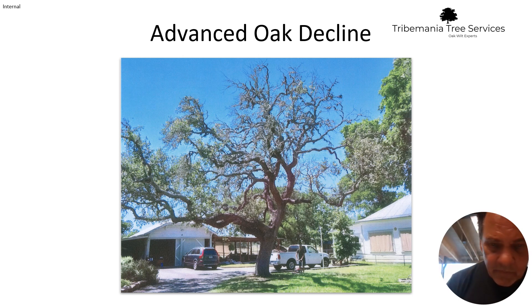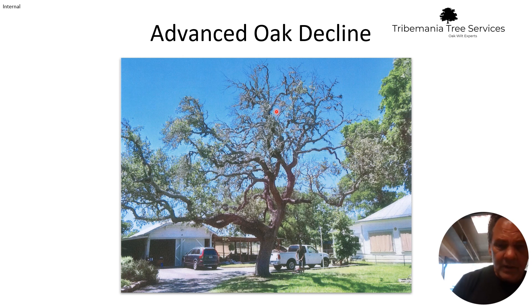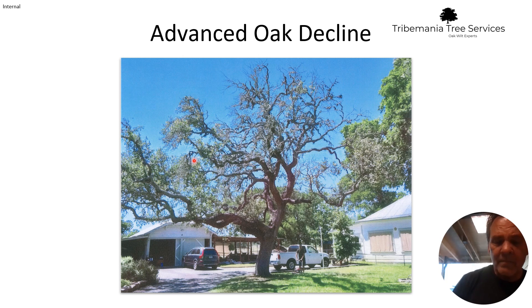This image is of a tree that is showing a very advanced stage of oak decline. We can see that the leaves have fallen off in parts of the tree. There's discoloration even in the leaves that are left, and then you've got branches that are dying. This is a very advanced stage of oak decline.